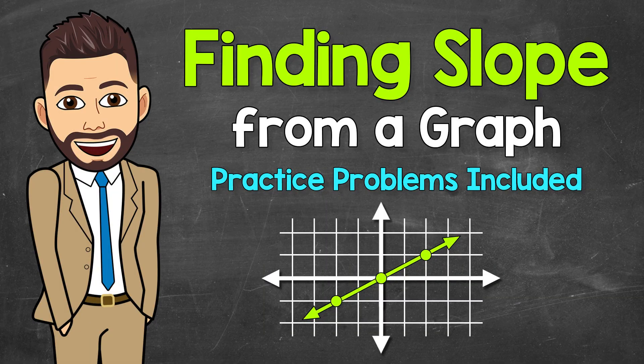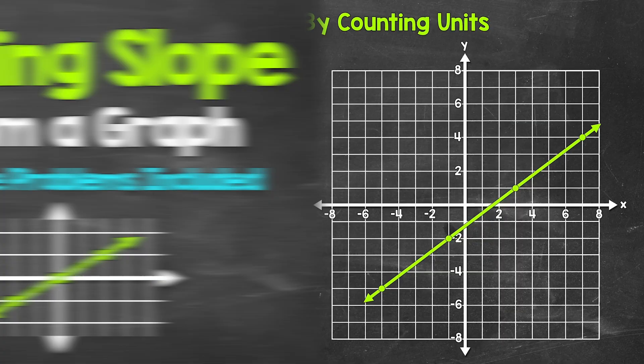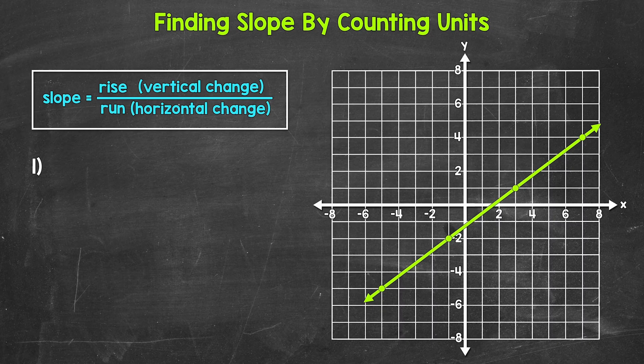Welcome to Math with Mr. J. In this video, I'm going to cover how to find slope from a graph by counting units. Remember, slope measures the steepness of a line — how much a line goes up or down as it moves from left to right. We will go through four examples together and then you'll try some practice problems on your own. Let's jump into number one, where we need to find the slope of the line graphed on the coordinate plane.